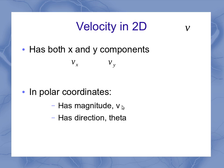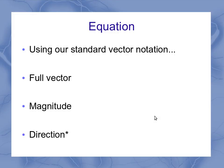The magnitude, though, is still just v, and I still have a direction of theta. Using our standard vector notation, the full vector v is vx in the i-hat direction plus vy in the j-hat direction.